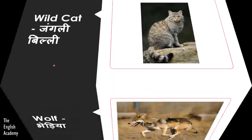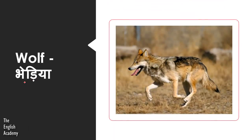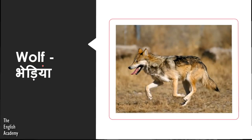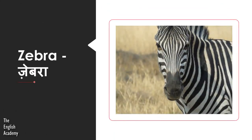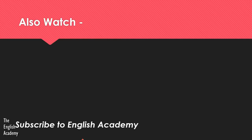The next animal is Bheria — Bheria is known as a Wolf. Then there is Zebra — Zebra is called Zebra in English as well. So this is all for this video. Thank you for watching, and please subscribe to our channel English Academy for more videos.